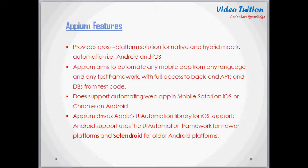Here is a list of Appium features. Appium provides a cross-platform solution for native and hybrid mobile automation — that is, Android and iOS. Appium aims to automate any mobile application from any language and any test framework, with full access to back-end interfaces and database from test code. Appium also supports automating web applications in mobile Safari on iOS or Chrome on Android. Appium drives Apple's UI Automation library for iOS support, and for Android uses the UI framework for newer platforms and SelenDroid for older Android platforms.